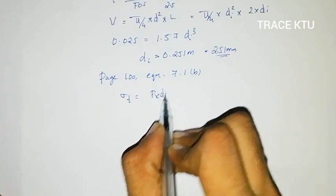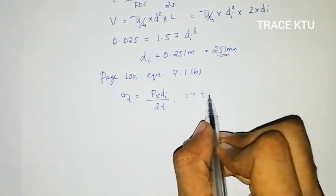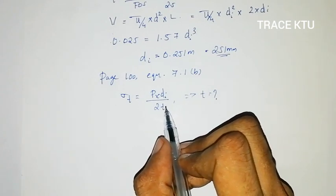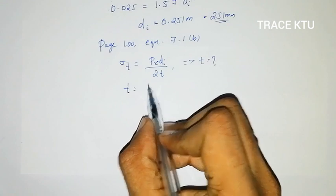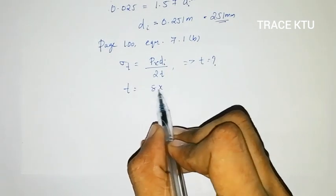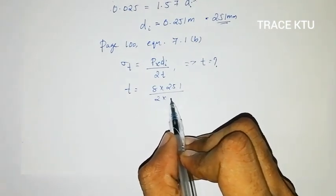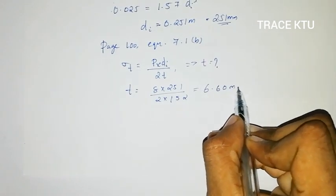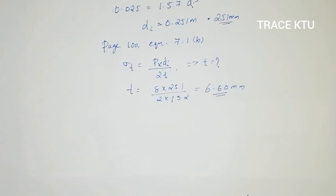Using equation 7.1b, sigma t equals p × di divided by 2t, accounting for efficiency. Substituting values: t = (p × di) / (2 × sigma t) = (8 × 0.251) / (2 × 152). The answer is t = 6.60 mm.